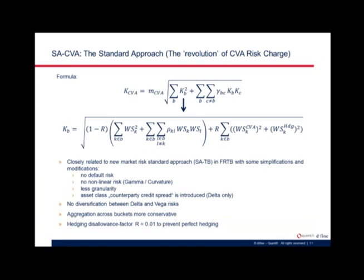The SA approach is based on a formula where the overall capital charge is a weighted sum of capital charges per risk bucket. Weighted sensitivities must be calculated for each bucket, aggregated across buckets including aspects like correlation. Compared to FRTB for market risk, some simplifications are made: there is no default risk and no non-linearity risk such as gamma is considered, but a new asset class is introduced — the counterparty credit spread — where deltas are calculated.